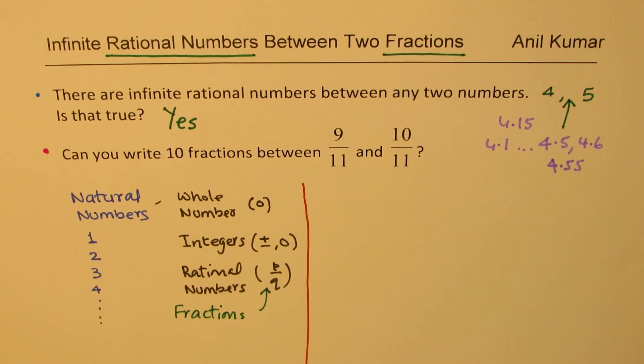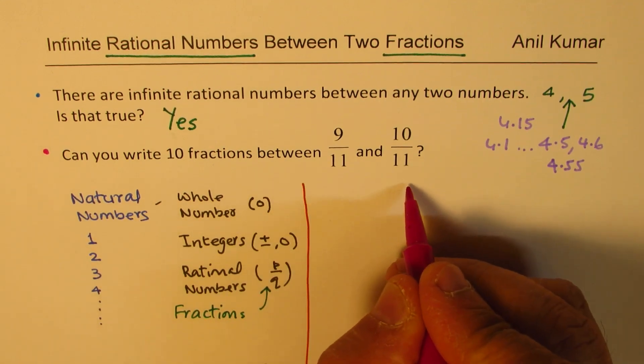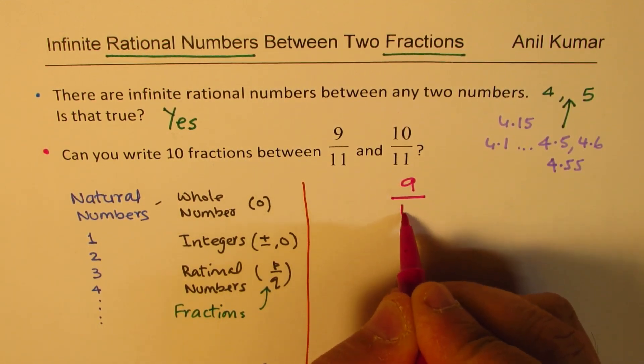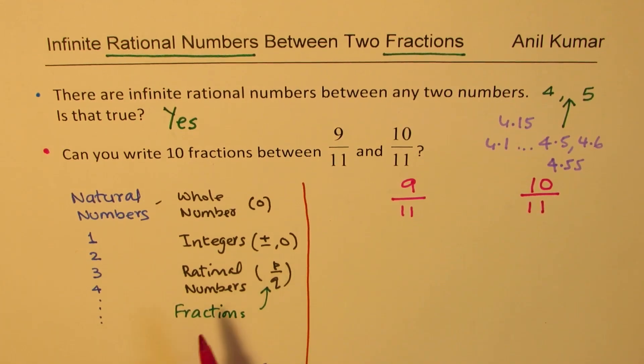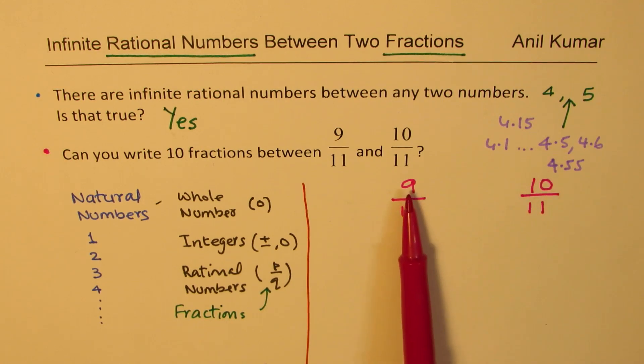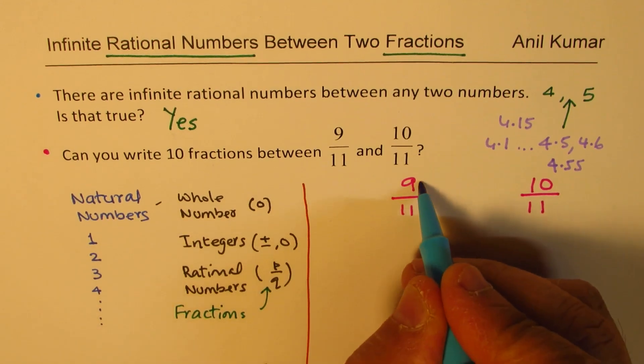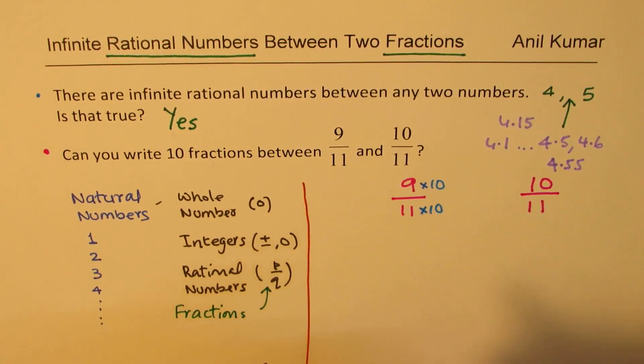So, here is a solution for this. So, let us begin with these two numbers. We have one number which is 9 over 11 and we have the other number. Let me keep it far away so that we could insert 10 numbers in between. Now, when we talk about rational numbers, these numbers are not decimal numbers. They are natural numbers. So, we cannot put 4.5 on the top or 9.5 on the top and do that. We can't do this. We have to do something which has the natural numbers on the top. How do we do that? Well, one way is that what I could do is that I could multiply both by 10.